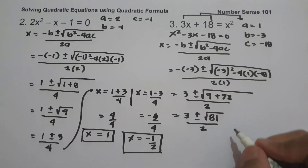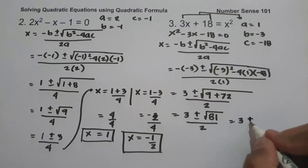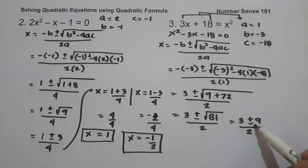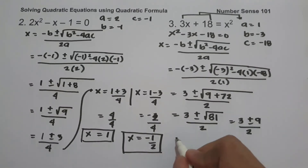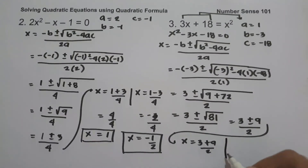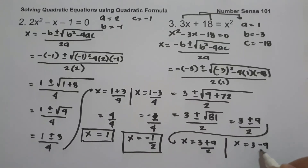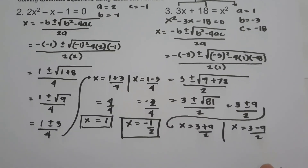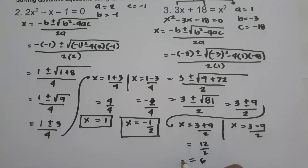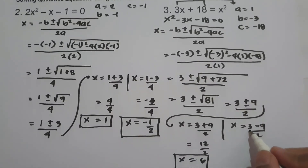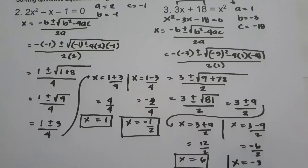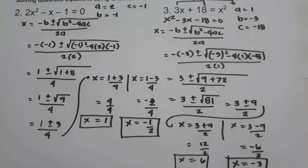The square root of 81 is positive and negative 9, over 2. Since the square root of 81 is positive and negative 9, we are going to have two equations. x equals 3 plus 9 over 2 — that is 12 over 2, which is 6. And x equals 3 minus 9 over 2 — that is negative 6 over 2, which is negative 3. So the values of x are 6 and negative 3.